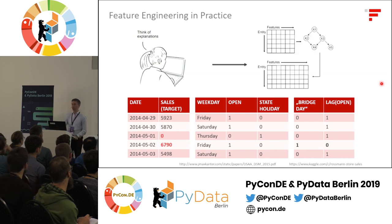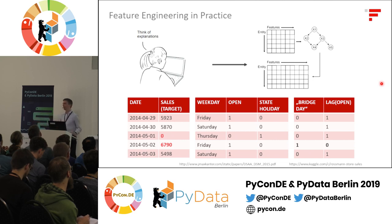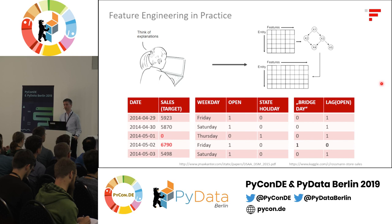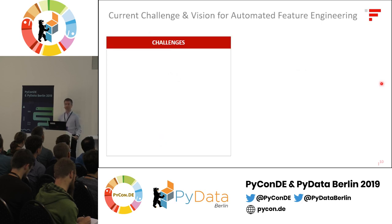In other words, feature engineering means there is a feature matrix at the beginning, and an engineer programs rules to extend this feature matrix by new columns, making it more accessible for the model. This is the current practice — how feature engineering is often done manually. But unfortunately, right now, not all is good.